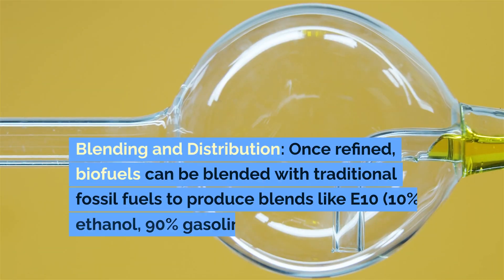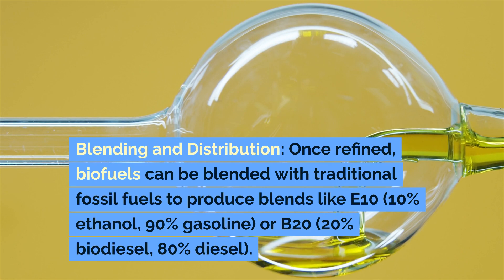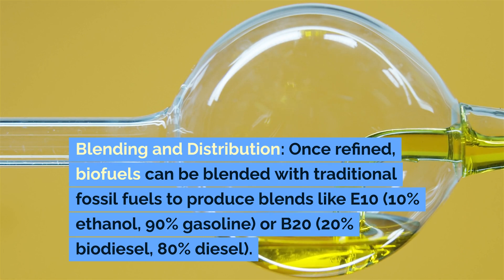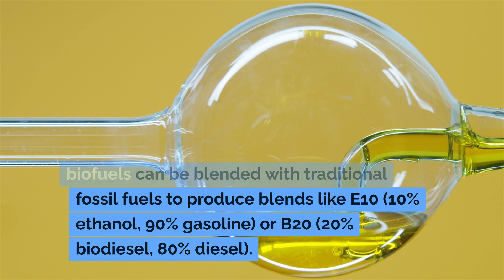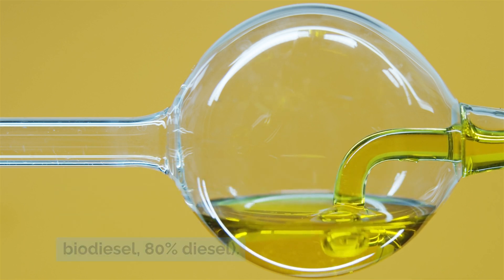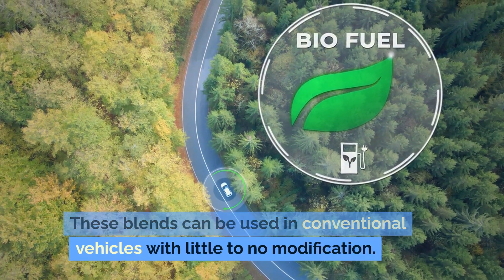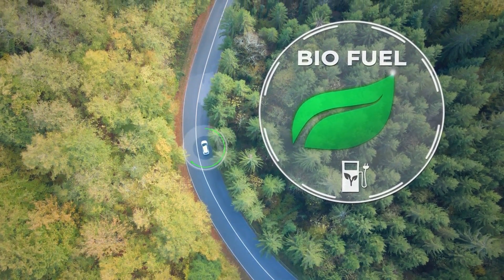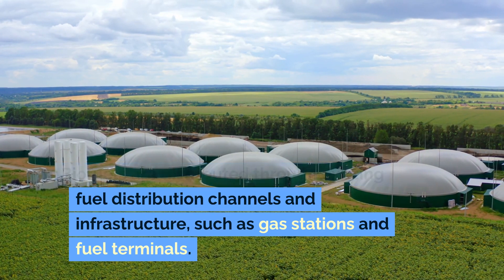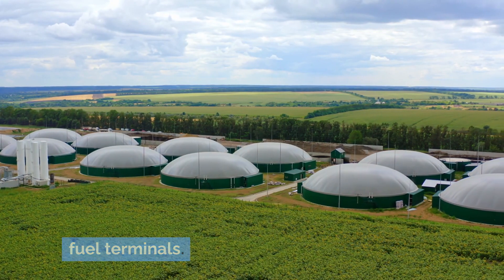Blending and distribution: once refined, biofuels can be blended with traditional fossil fuels to produce blends like E10 (10% ethanol, 90% gasoline) or B20 (20% biodiesel, 80% diesel). These blends can be used in conventional vehicles with little to no modification. Biofuels are distributed through existing fuel distribution channels and infrastructure, such as gas stations and fuel terminals.